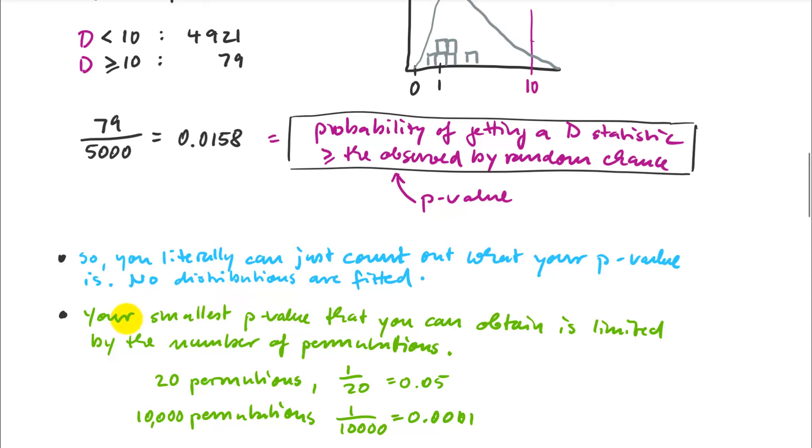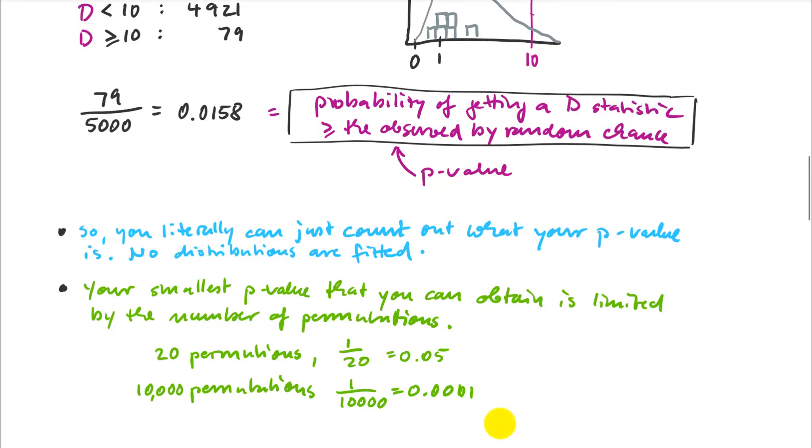One thing you have to keep in mind is that your smallest p-value in this permutation MANOVA is limited by the number of permutations. If you only run 20 permutations, 0.05 is the smallest p-value you can possibly get. Crank that number up - 10,000 is a good value. This gives you a p-value of 0.001, one out of 10,000. This will give you the smallest non-zero p-value that would be reported. You don't usually care to quantify it if it's even smaller than that.